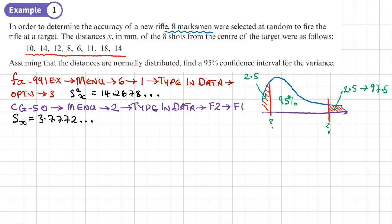The next thing I would do is to work out the sample variance, so I'd use my calculator. If you're using the ClassWiz FX991EX, it's menu 6, 1, you type in your data, option 3, and it gives me the sample variance as 14.2678. If you're using the CG50, it's menu 2, you type in the data, and it's F2 and F1. The CG50 doesn't give you the sample variance, only the sample standard deviation, so we're going to have to square this when we use it.